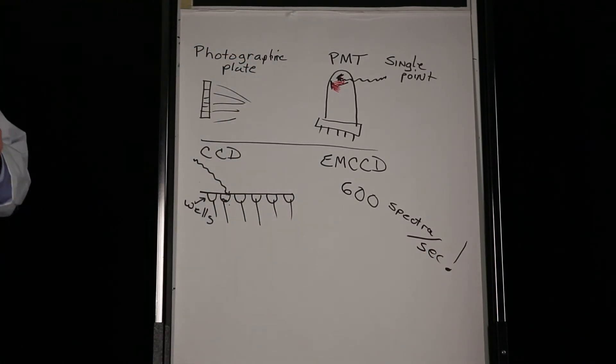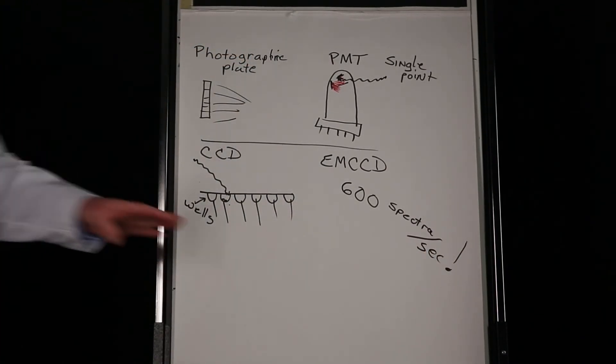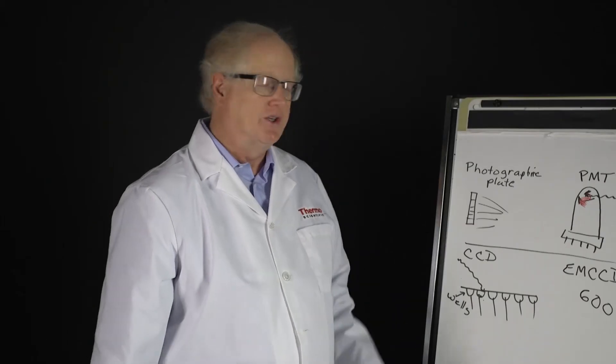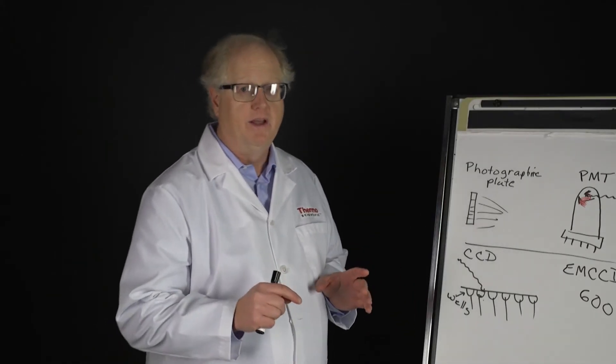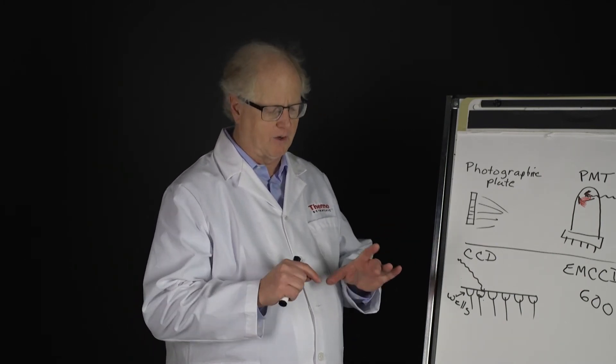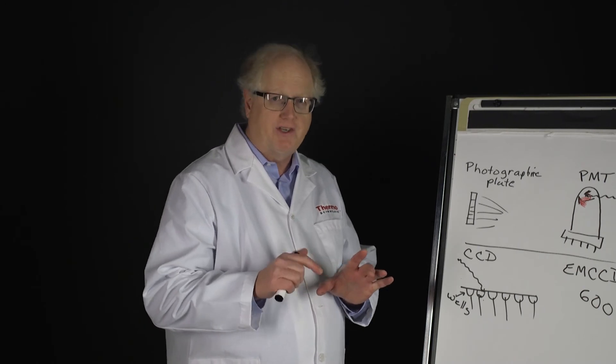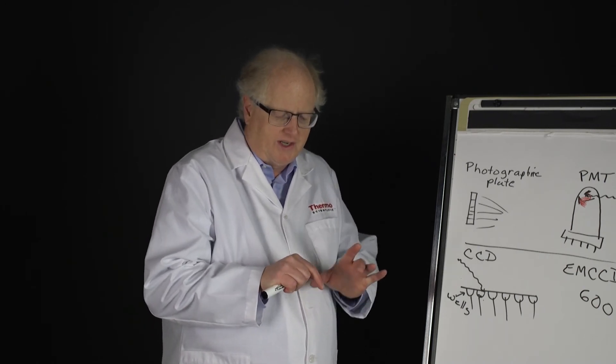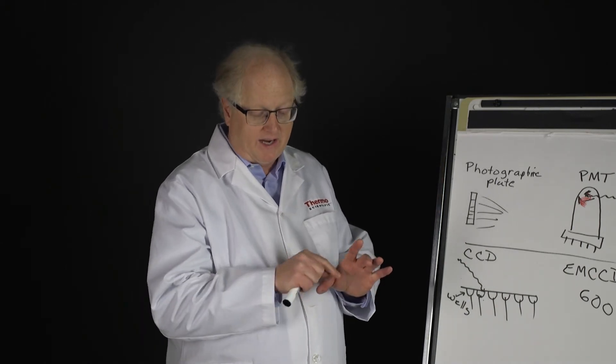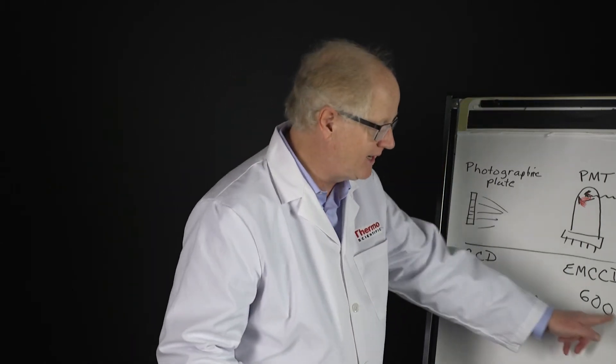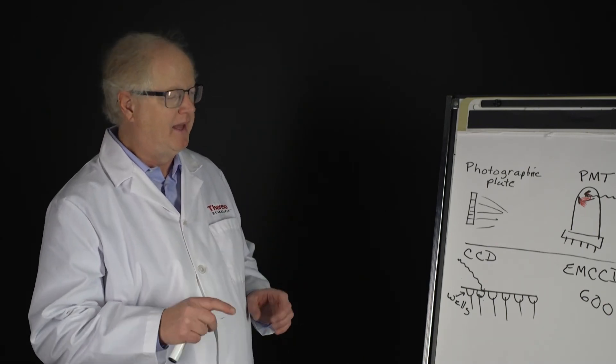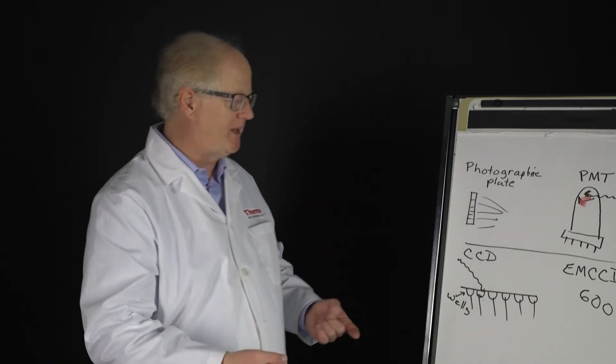That's the key for the EMCCD - it is used to allow you to collect a lot of spectra in a hurry so that you can image. And in the, again referring to the DXR Xi microscope, the stage never stops. It actually continuously scans while the EMCCD is clicking away and collecting that data, so that you can collect it at this speed, 600 specs per second, and then co-add them to build up that image.